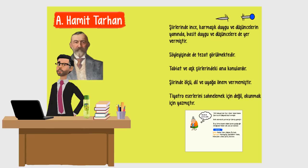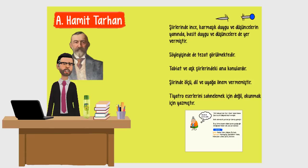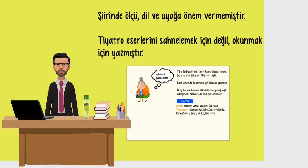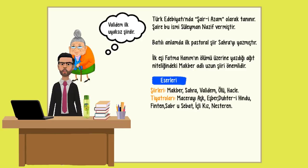Şimdi ise Abdülhak Hamit Tarhan'a bakıyoruz. Şiirlerinde ince, karmaşık duygu ve düşüncelerinin yanında basit duygu ve düşüncelere de yer vermiştir. Söyleyişinde de tezat görülmektedir. Tabiat ve aşk şiirlerindeki ana konulardır. Şiirinde ölçü, dil ve uyağa önem vermemiştir. Tiyatro eserlerini sahnelemek için değil, okumak için yazmıştır. Türk Edebiyatında şair-i azam olarak tanınır; bu ismi kendisine Süleyman Nazif vermiştir. Batılı anlamda ilk pastoral şiir Sahra'yı yazmıştır. İlk eşi Fatma Hanım'ın ölümü üzerine yazdığı ağıt niteliğindeki Makber adlı uzun şiiri önemlidir.